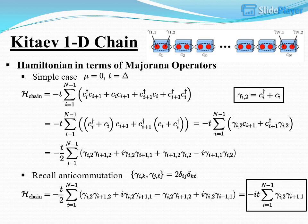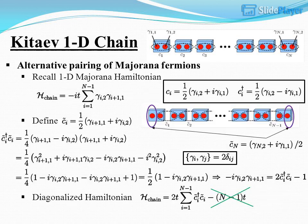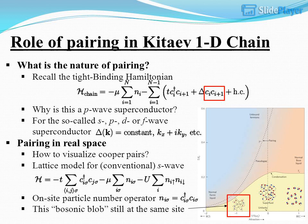Simple case recalled: anti-commutation relations for the 1D-chain. The alternative pairing of Majorana fermions is presented. Recalling the 1D Majorana Hamiltonian, a diagonalized Hamiltonian is defined. The role of pairing in the Kitaev 1D chain is discussed.